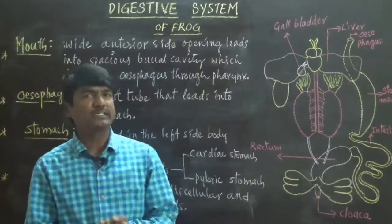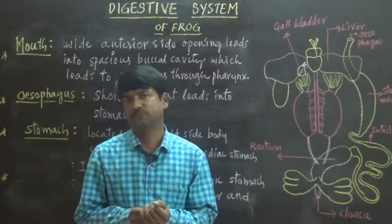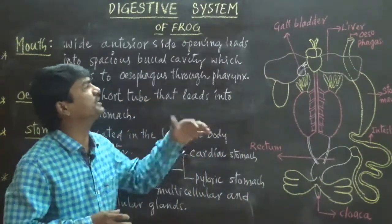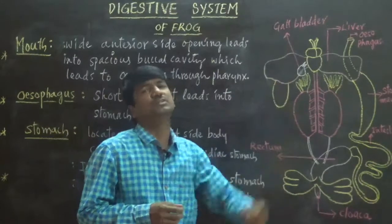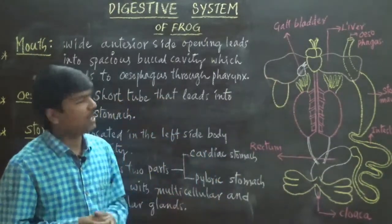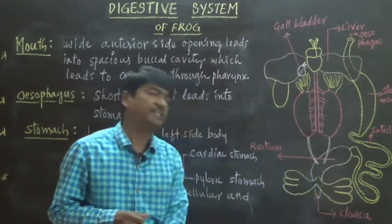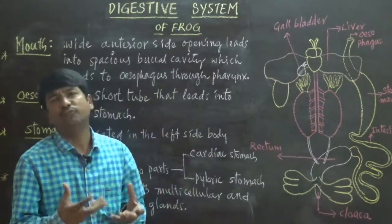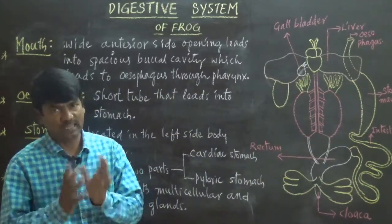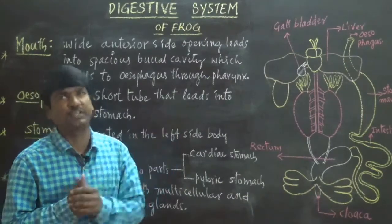The alimentary canal is generally composed of the following characters: mouth, pharynx (parings), esophagus, stomach, intestine, rectum, and finally opens outside to the cloaca. These are all the structures associated with the alimentary canal.